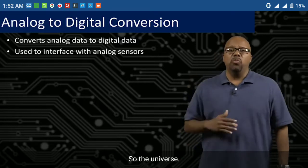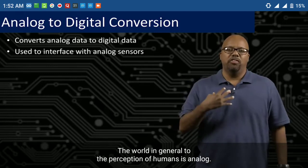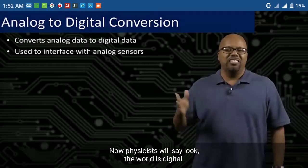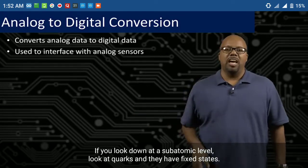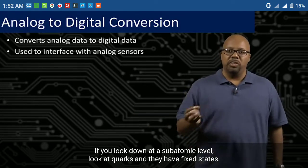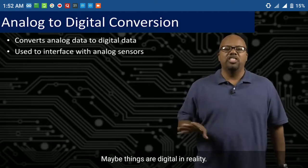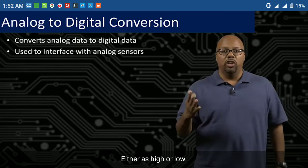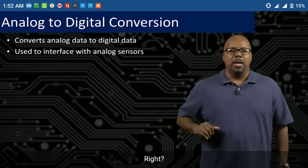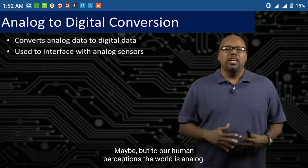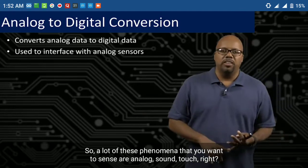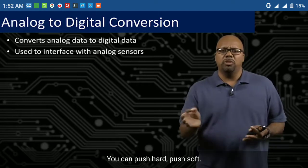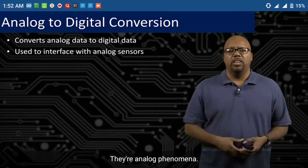The universe, the world in general, to the perception of humans is analog. Physicists will say that if you look at a subatomic level — at quarks — they have fixed states, maybe things are digital in reality; they are discrete, either high or low. But to our human perceptions, the world is analog. A lot of phenomena you want to sense are analog: sound, touch — you can push hard or push soft. They're analog phenomena.